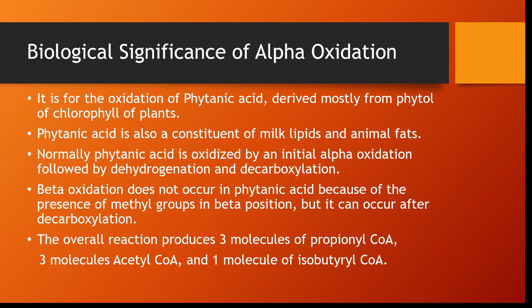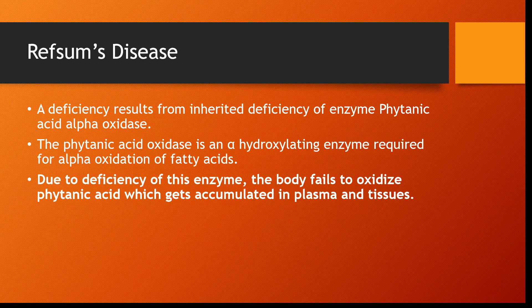The net result of this alpha oxidation results in formation of propionyl-CoA — three molecules of propionyl-CoA, three molecules of acetyl-CoA, and one molecule of isobutyl-CoA. Finally, the phytol component will be converted into propionyl-CoA, acetyl-CoA, and isobutyl-CoA.